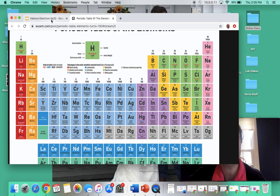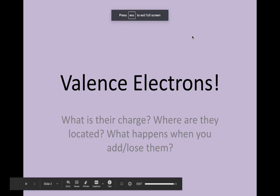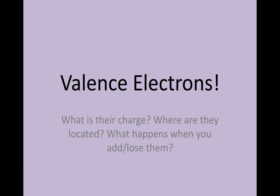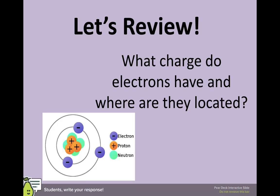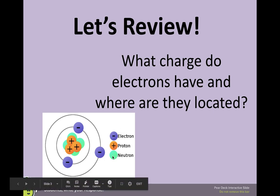Let's go ahead and get started. Today we're going to talk about valence electrons, what is their charge, where are they located, and what happens when you add or lose them. Let's review first, what charge do electrons have? If you said negative, you are right. Don't forget electrons are negative, protons are positive, and neutrons are neutral.